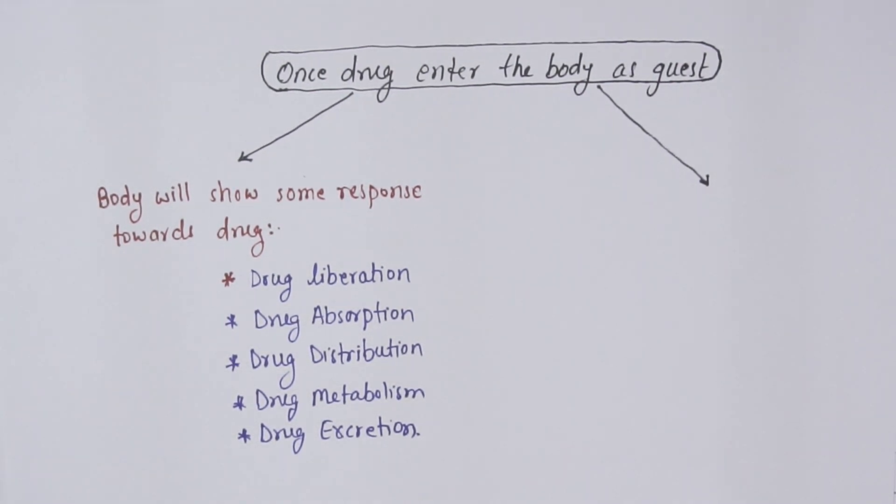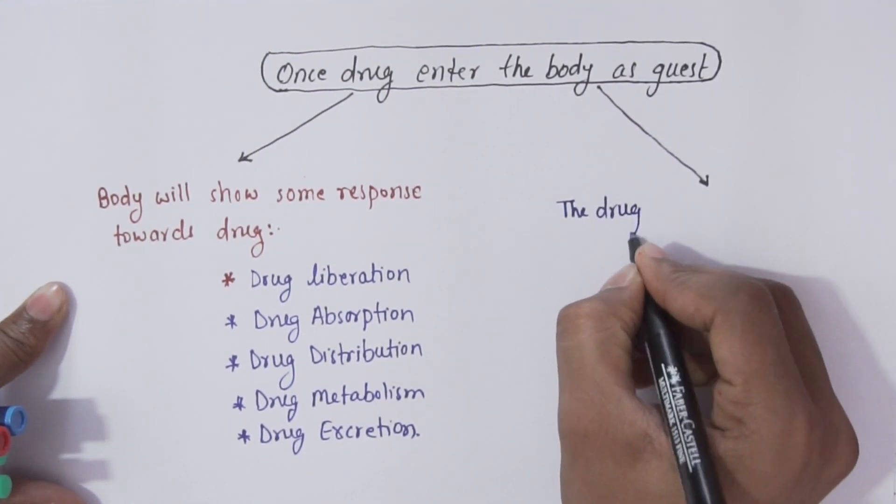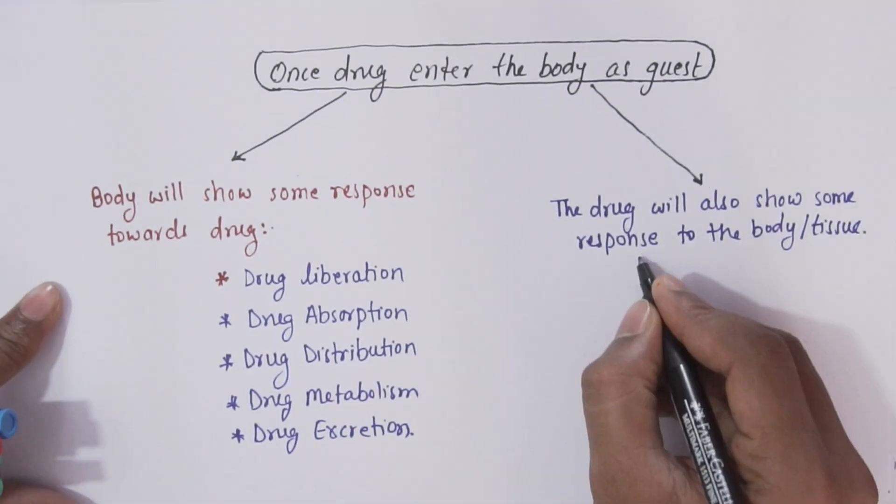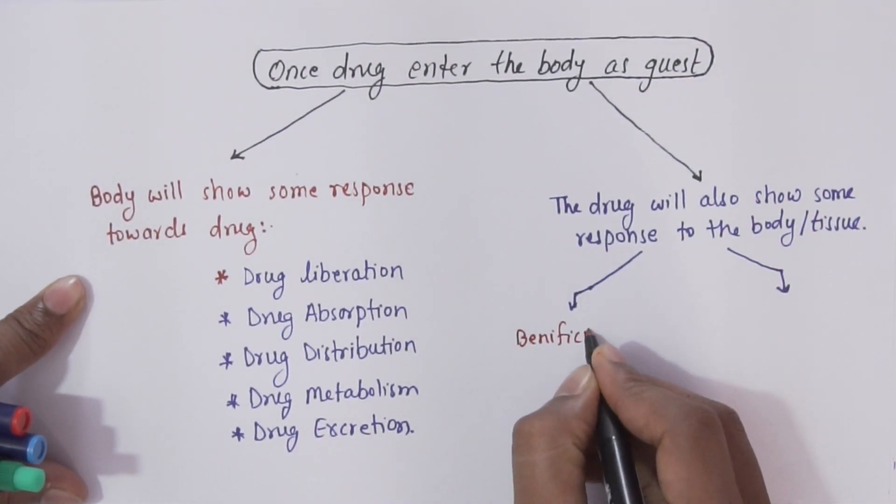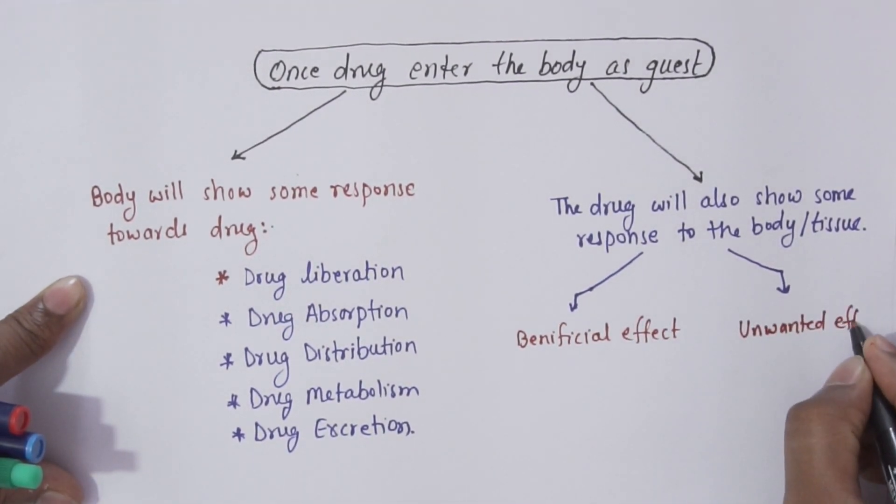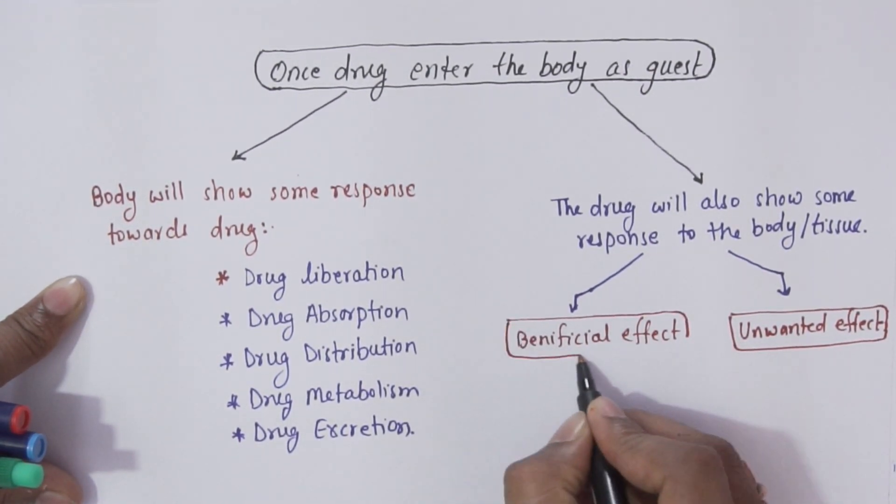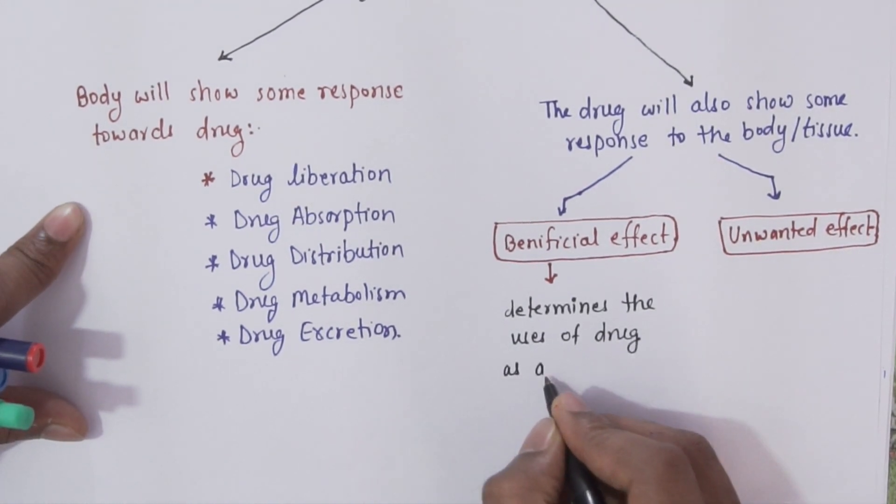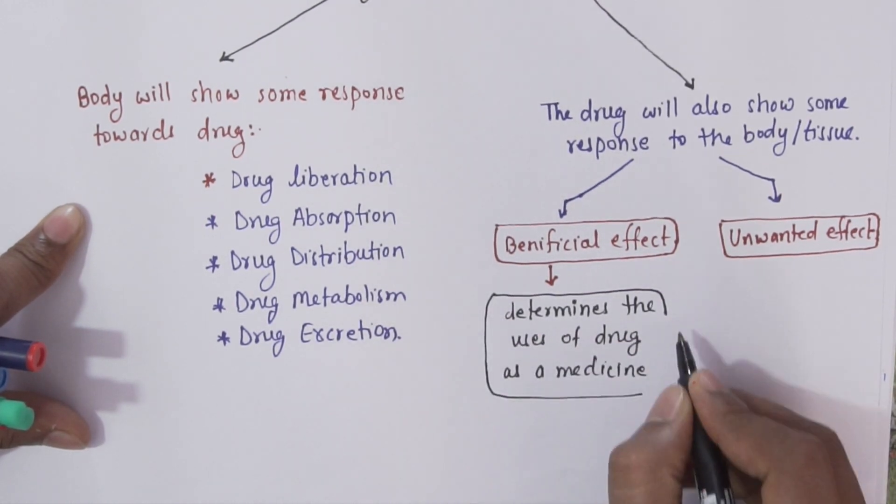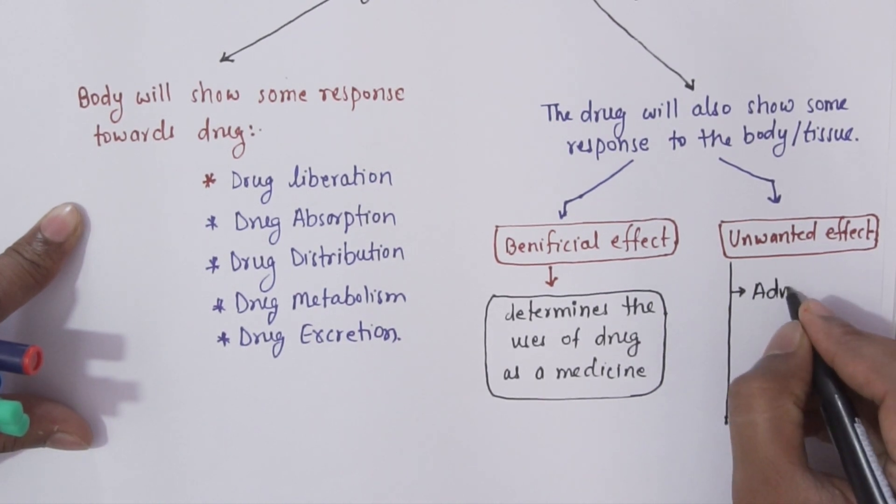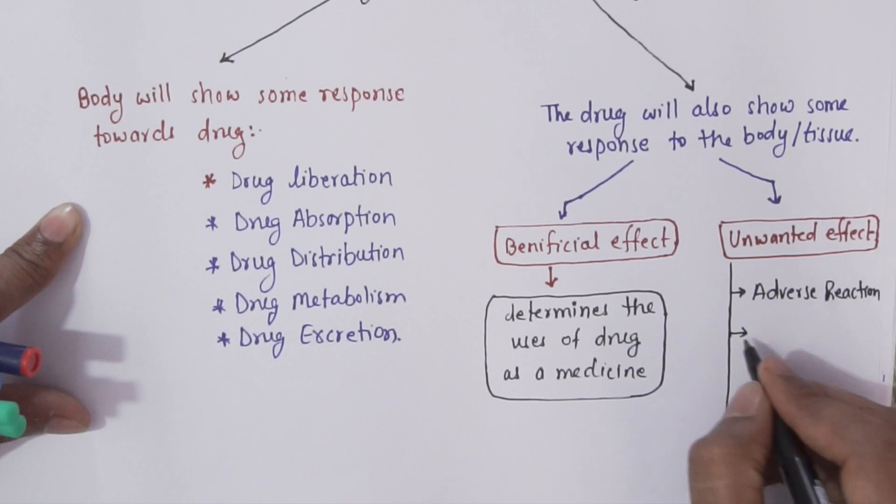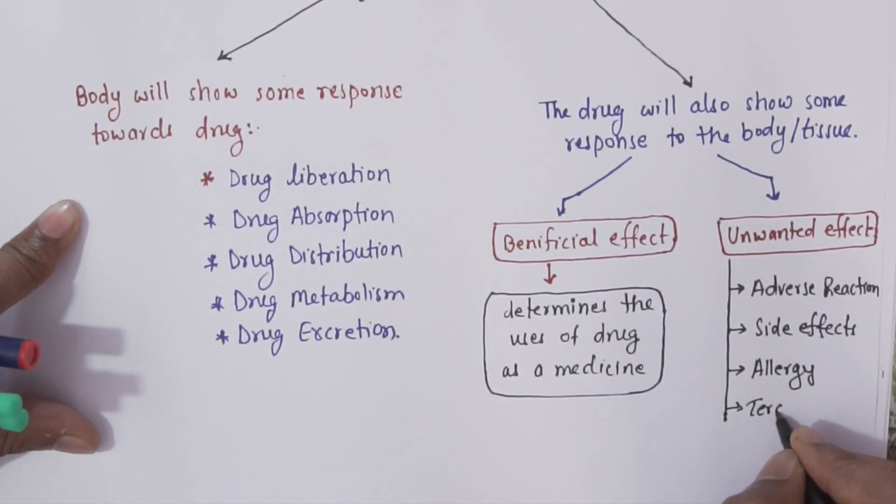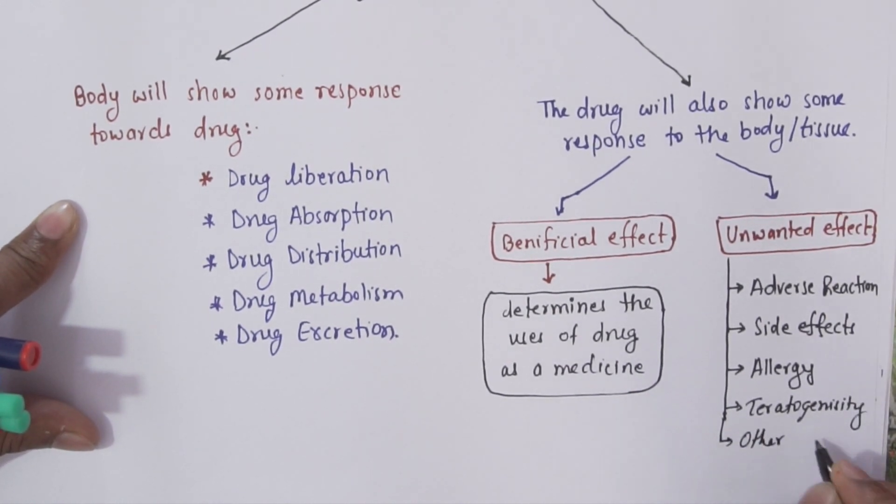The second scenario is where the drug will also show some biological response to the body or tissue. These responses may be beneficial or may be unwanted effect or dangerous effect. These beneficial effects will basically give the idea about the usage of drug as a medicine, whereas the harmful effect will limit the usage of drugs as a medicine. For example, it will give idea of adverse reaction, side effects, allergy, teratogenicity, and many other issues.